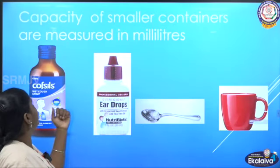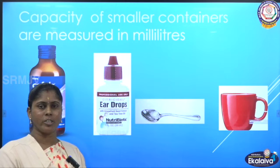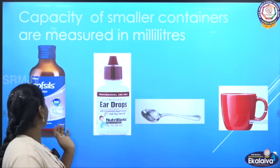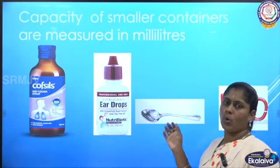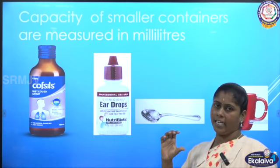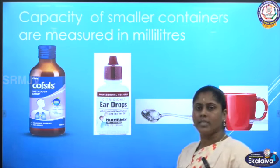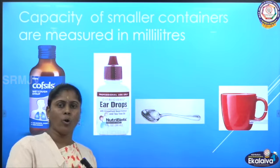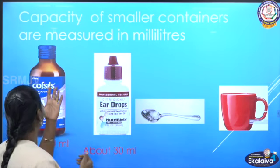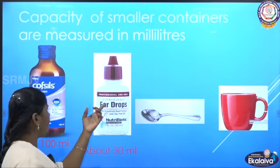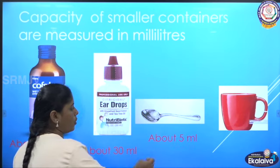These are the smaller containers and we use millilitres to measure their capacity. You would have seen medicines like cough syrup and eardrops sold in bottles that hold liquid in millilitres. Here you can also see a cup and a spoon — these are small containers that hold liquid in millilitres. This syrup bottle can hold 100 millilitres, this eardrops bottle can hold 30 millilitres, this spoon can hold 5 millilitres, and this cup can hold 200 millilitres.